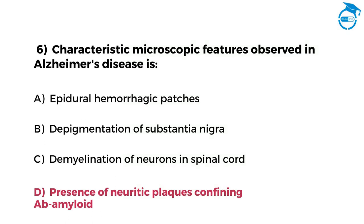The right option is D, that is presence of neuritic plaques containing beta-amyloid. Few more questions left.